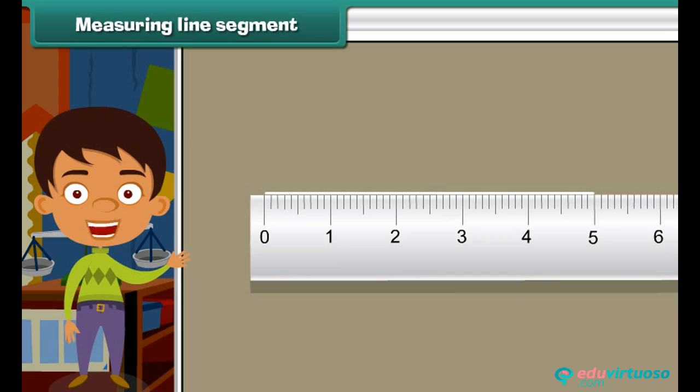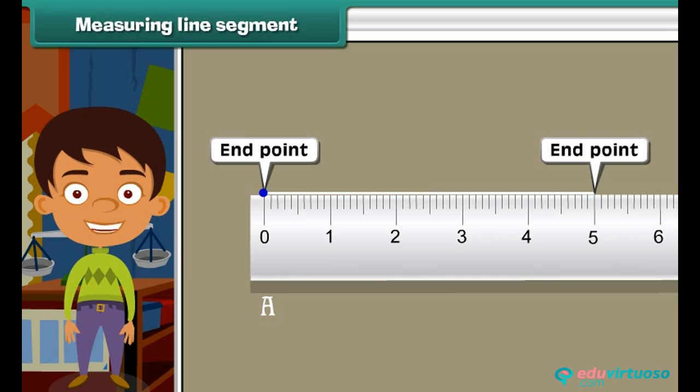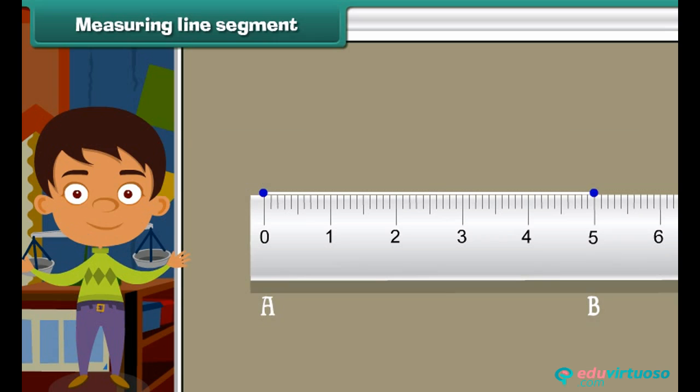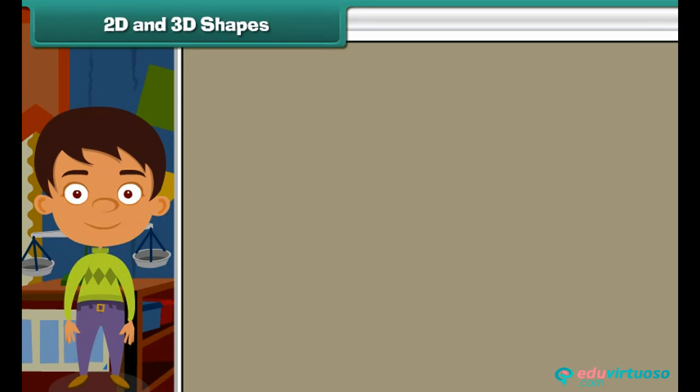Put one end of the scale starting with zero just below point A. On going from point A to B, digits zero, one, two, three, four, and five are traveled. Therefore, the length of the line segment is five centimeters.